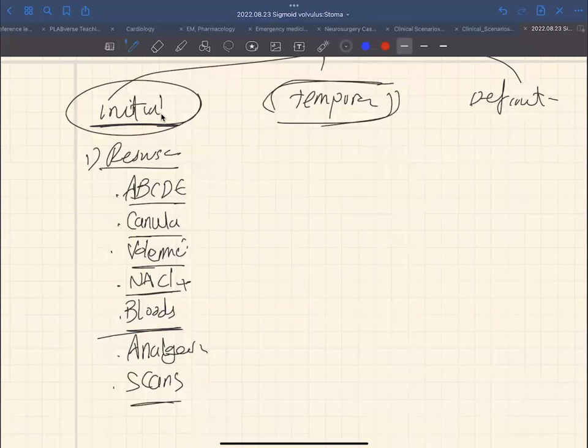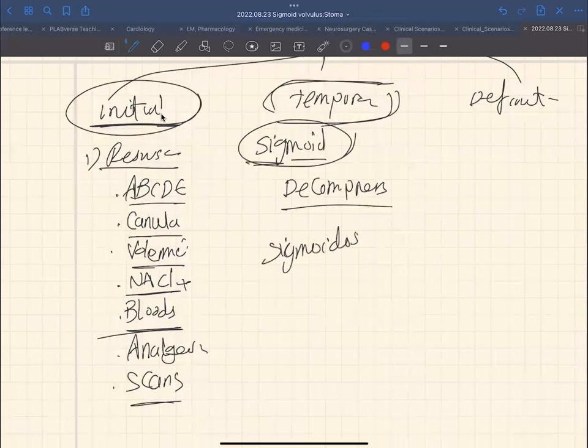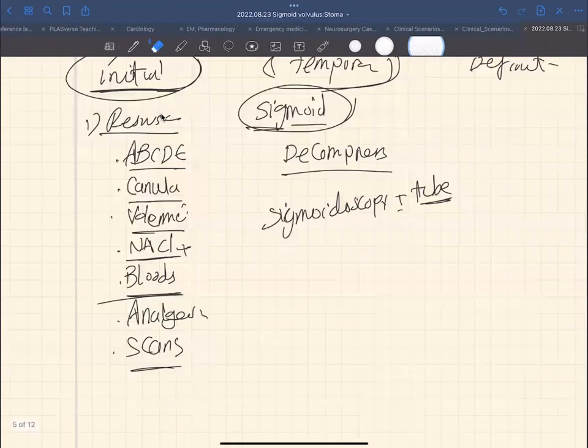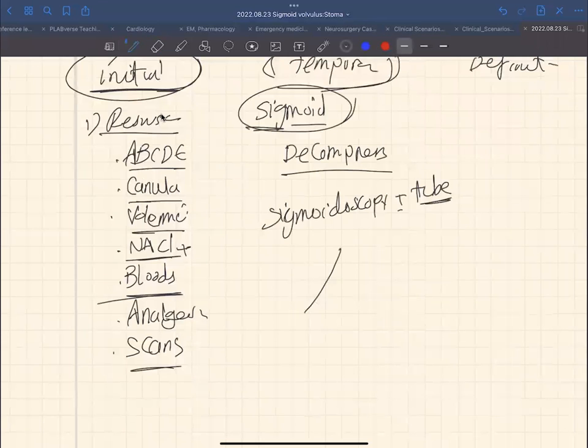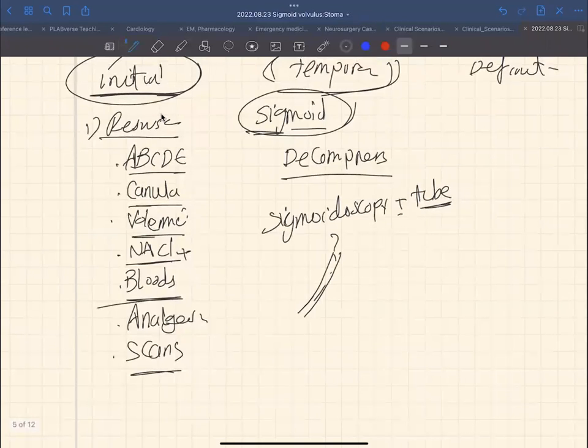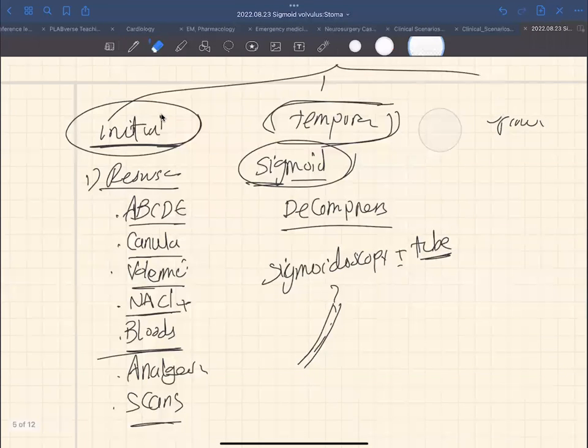Number two, temporary. So now you know that it is sigmoid volvulus. So what you need to do here is to decompress the bowel. And this can happen by sigmoidoscopy plus minus tube insertion. So basically, we'll pass the rigid sigmoidoscope, and the tube through it that goes into the tummy to decompress the bowel, evacuate some of the stools, evacuate some of the air inside, and the patient, boom, suddenly relieved.